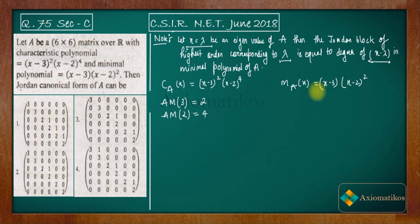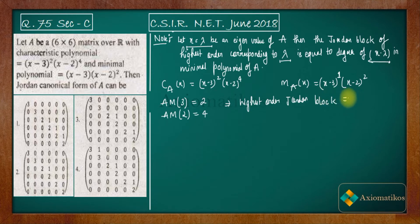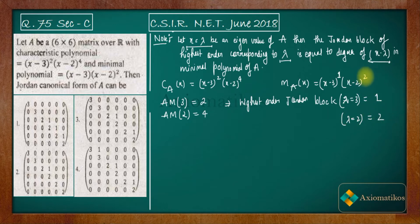Now let us look at the minimal polynomial. Corresponding to eigenvalue 3, the degree of (x−3) in the minimal polynomial is 1. This implies that the highest order Jordan block corresponding to eigenvalue 3 is 1. Corresponding to eigenvalue 2, the degree of (x−2) in the minimal polynomial is 2, so the highest order Jordan block corresponding to eigenvalue 2 is 2.